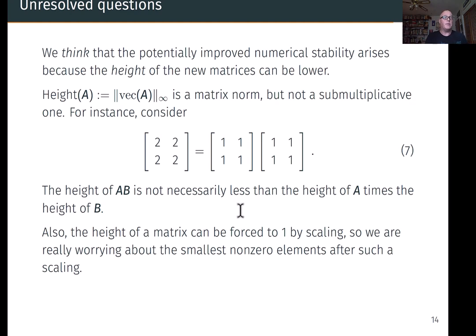We do not have anything like all of the answers for this. We think that the potentially improved numerical stability arises because the height of the new matrices can be lower. Now, it's not always true that when you factor something you get lower height, but you frequently do. So sometimes when you factor you get larger height, and we don't recommend doing algebraic linearization in that case.